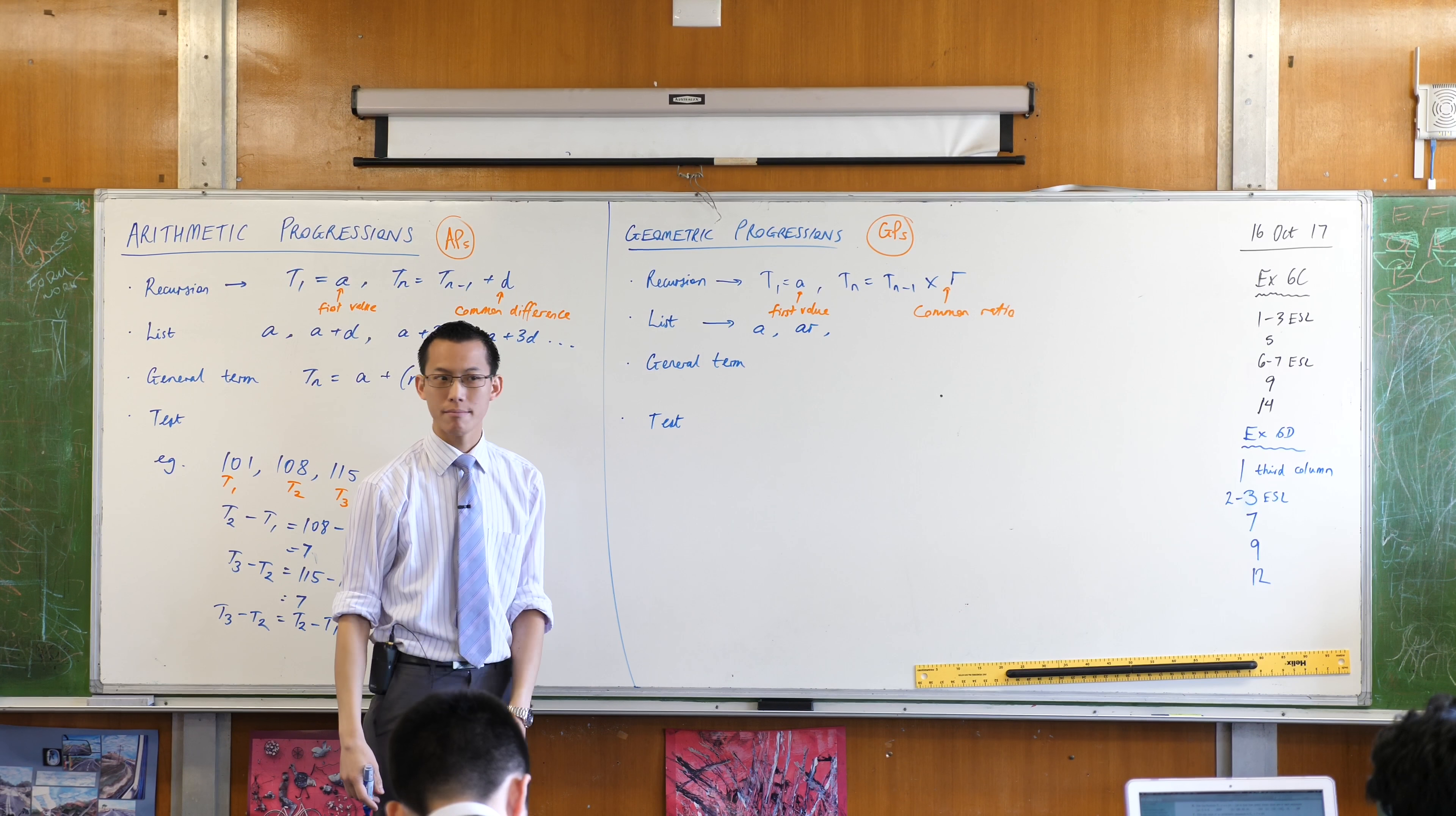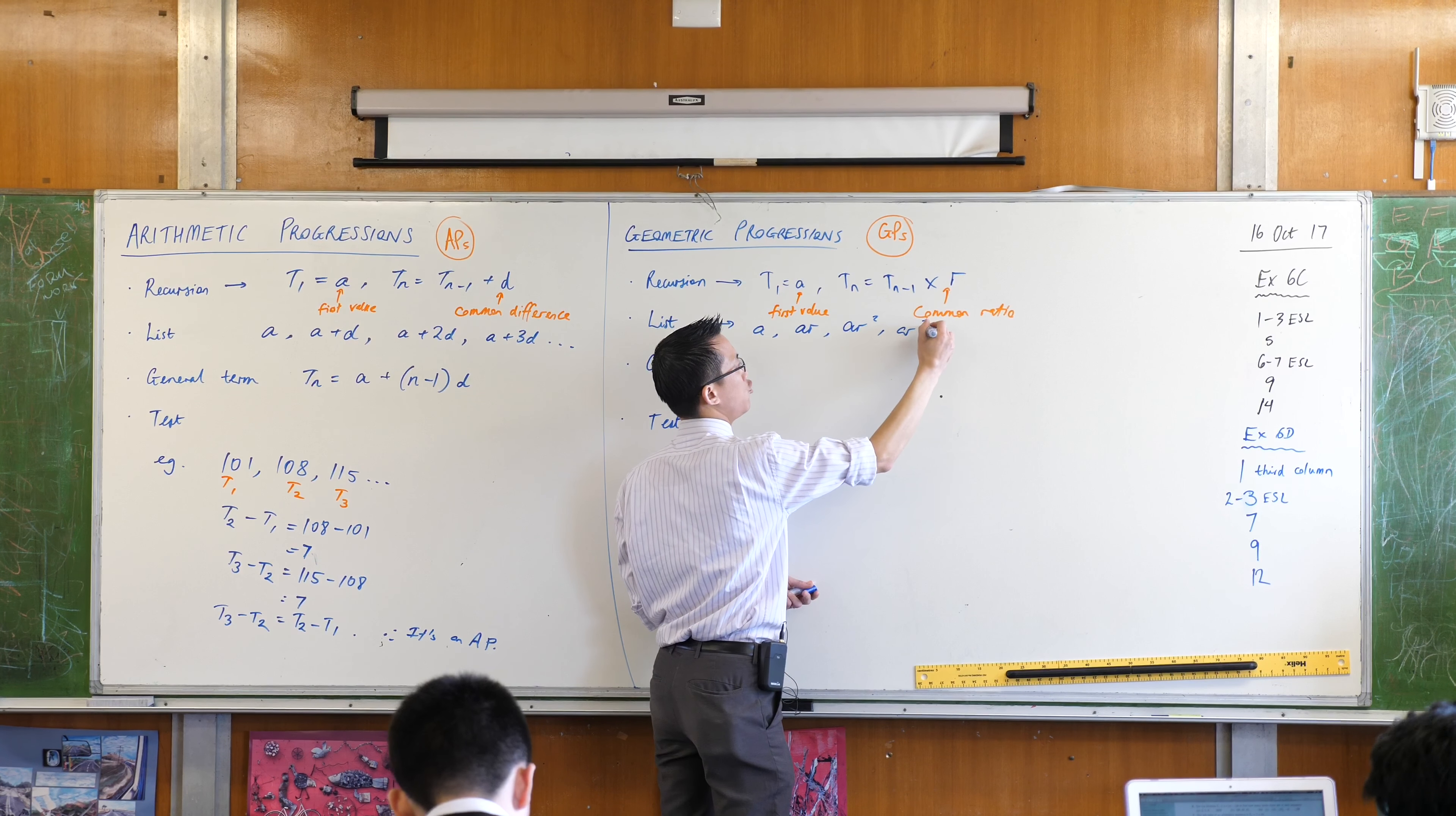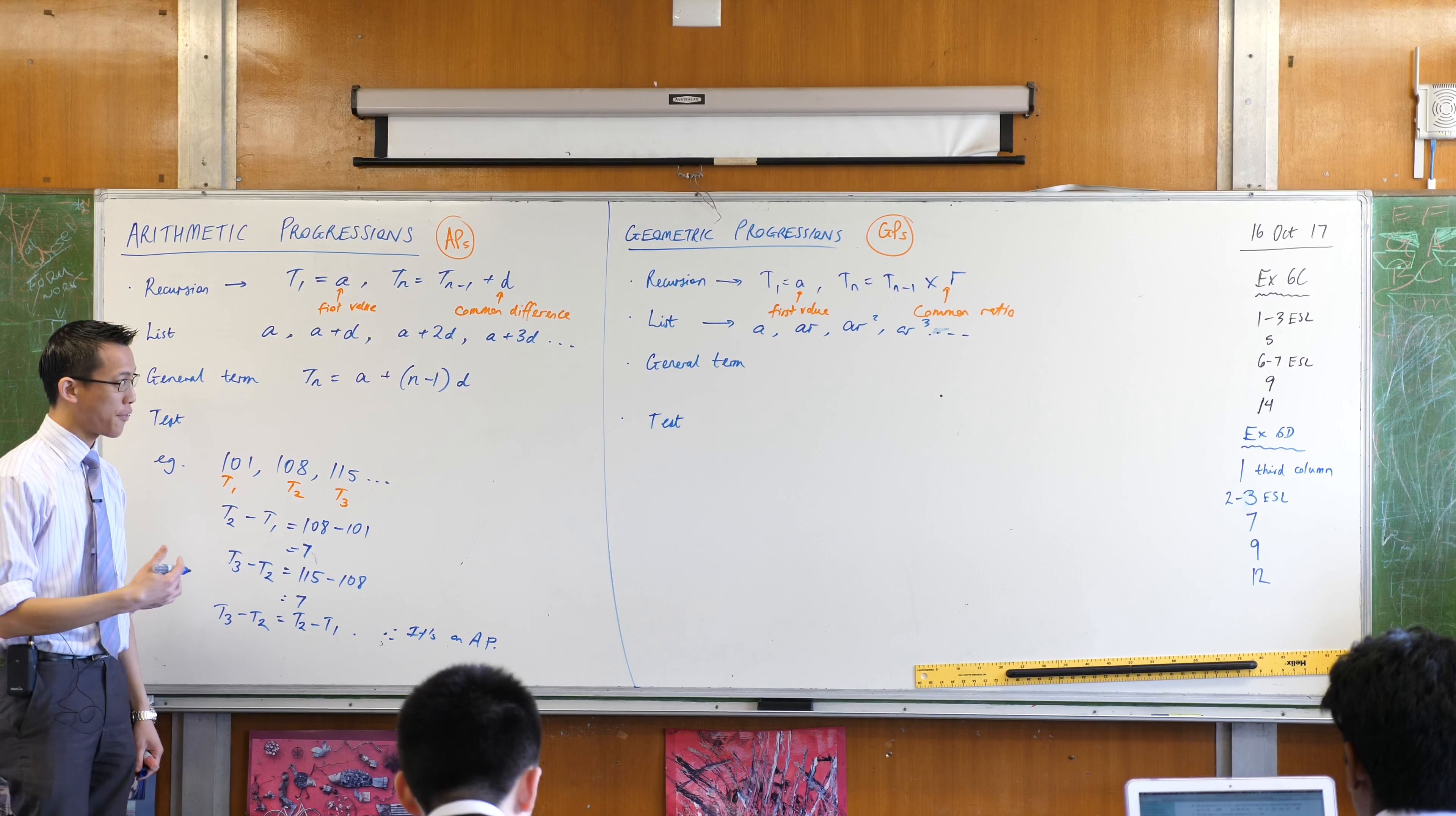What will the next term be? AR times R again, which is AR squared. And then AR cubed and so on. So that's what a list looks like for a GP.